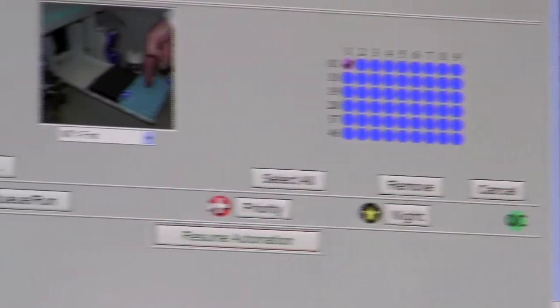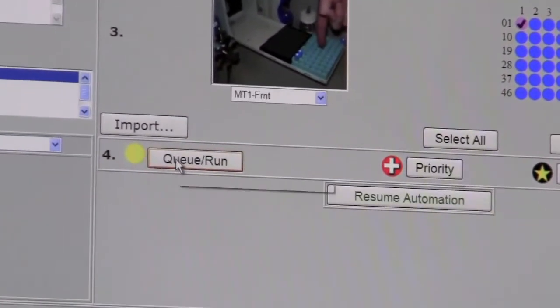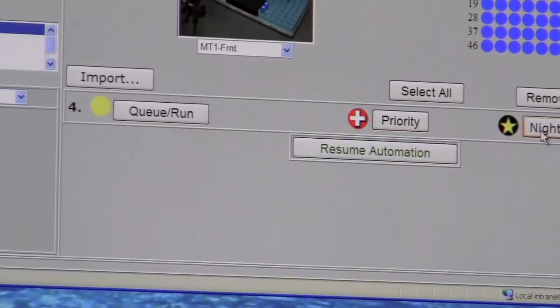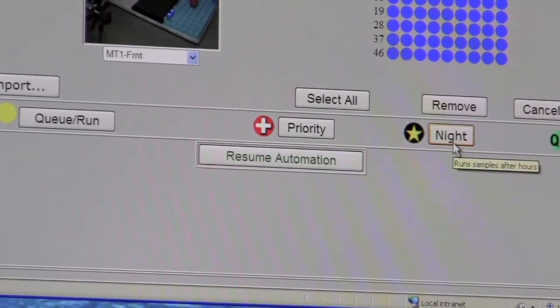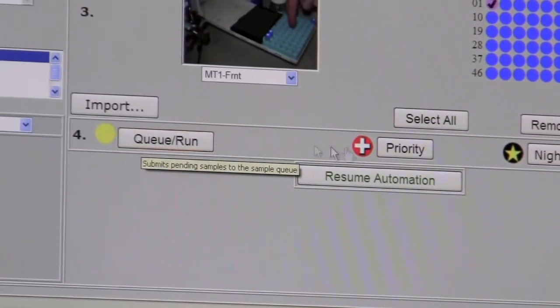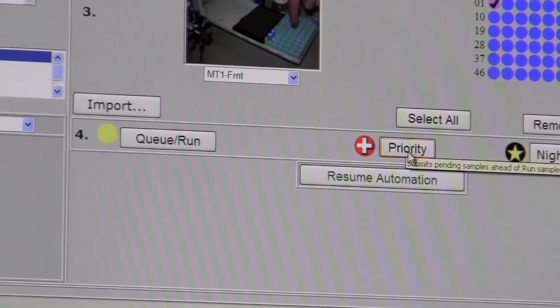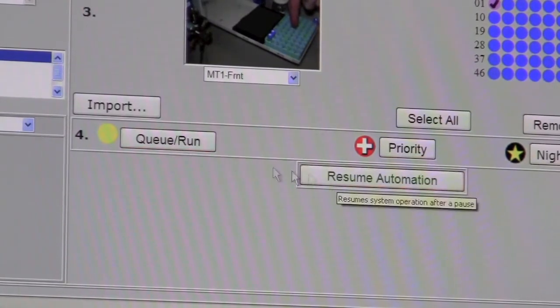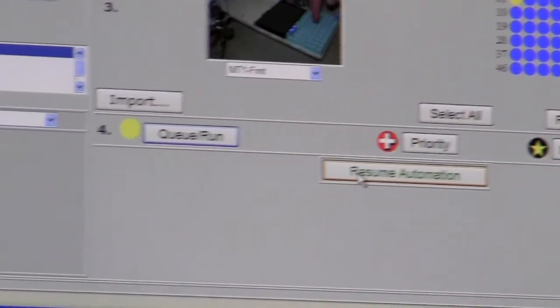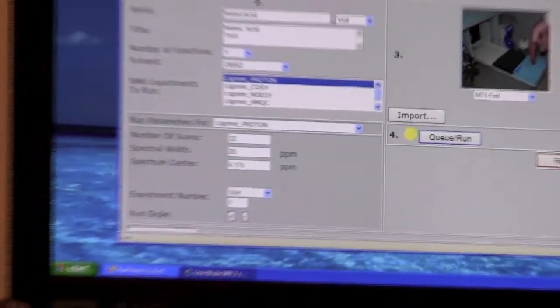Finally, we need to run the sample. There's three options. A standard run, a priority run if you have that privilege, and a nighttime run. Nighttime will wait until after midnight to run. A standard run will run as soon as possible, and a priority run will run before everything else if you have that privilege. So in this case, we will click on run, and then the sample will run.